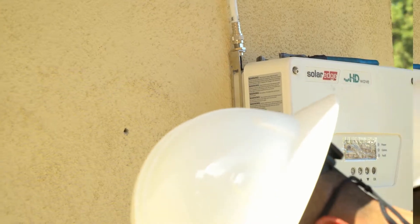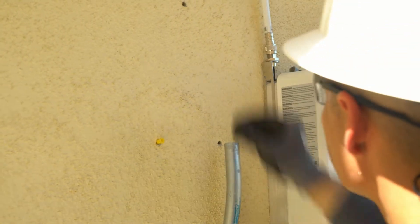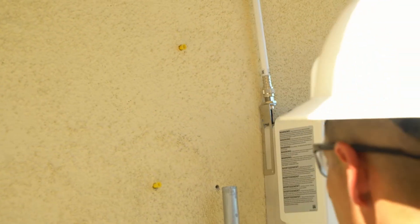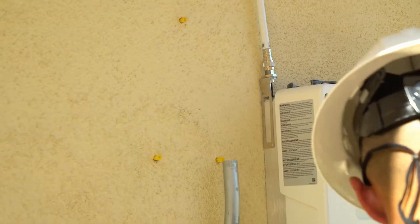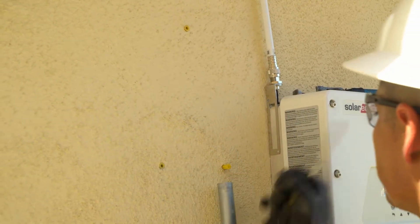Then once you have your holes, you can insert your wall anchors. In this case, this installer is using plastic stucco anchors. In our simulation, we used metal wall anchors because we were going into brick.